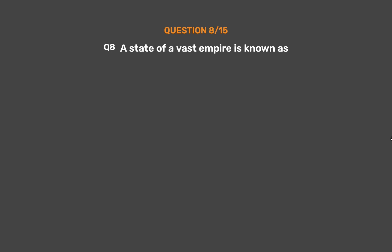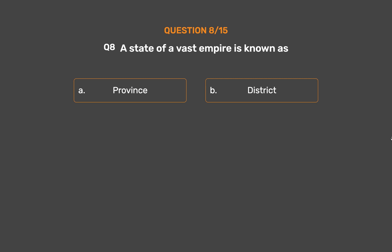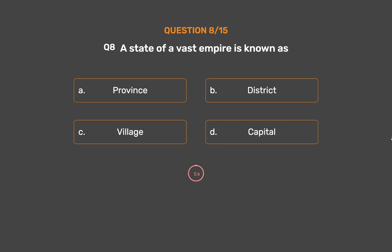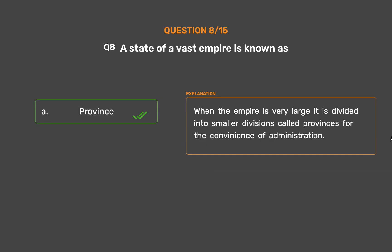Question No. 8. A state of a vast empire is known as: Option A: Province. Option B: District. Option C: Village. Option D: Capital. The correct answer is Option A: Province. When the empire is very large, it is divided into smaller divisions called provinces for the convenience of administration.